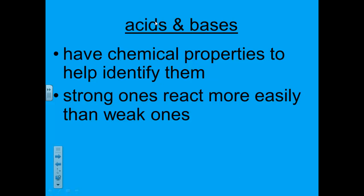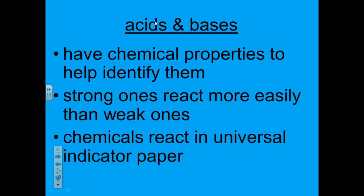These reactions produce color changes in the paper. Substances that are strong acids will turn the paper red. Strong bases will turn the paper purple. Weaker acids or bases will produce different colors. We will be doing an experiment in class with universal indicator paper to identify acids and bases.